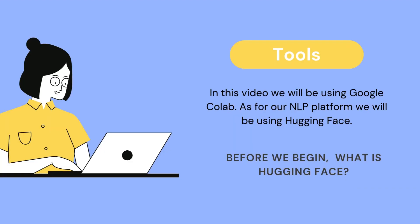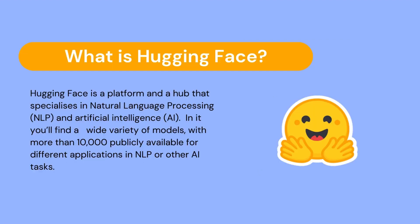In this video we will be using Google Colab, and for our NLP platform we will be using HuggingFace. HuggingFace is a platform and hub that specializes in natural language processing and AI. It encourages collaboration and sharing with the AI community, and in it you will find a variety of models — more than 10,000 publicly available — for different applications in NLP, computer vision, and other AI tasks. We won't build our own summarization model but rather import and use a pre-trained model to do the summarization task for us.